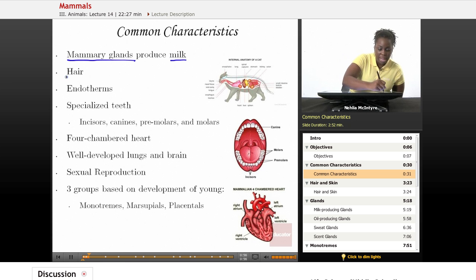Also mammals have hair. They're also categorized as being endotherms which means that they are able to regulate their own body temperature.